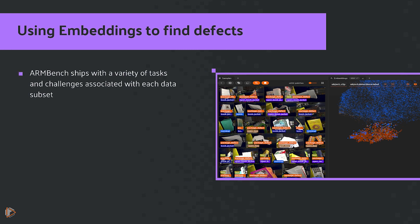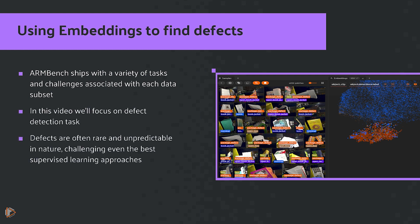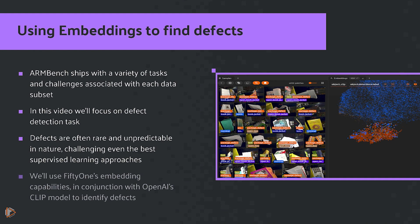ARMBench ships with a variety of tasks and challenges associated with each of these data subsets, but in this video we're going to focus on the defect detection task. As you know, defects are often rare and unpredictable in nature and can be challenging even to the best supervised learning approaches. So we're going to use FiftyOne's embedding capabilities in conjunction with OpenAI's CLIP model to see if we can do a better job of identifying these defects.